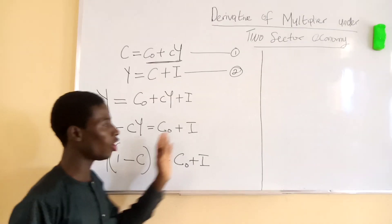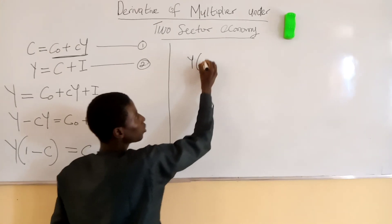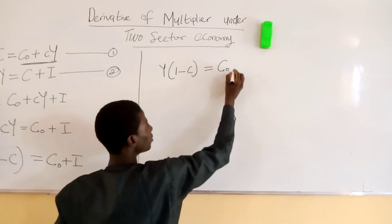Moving to the other side, we have Y bracket one minus c equals C sub zero plus I, which is our investment.